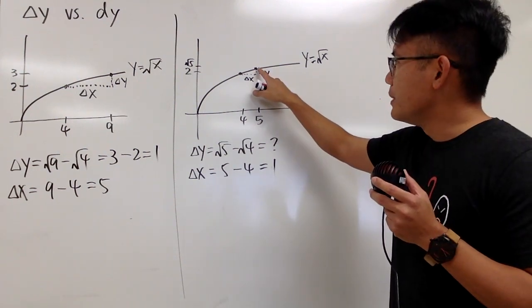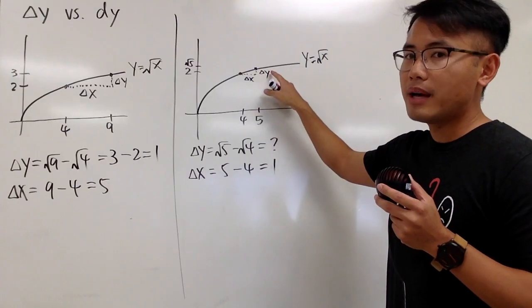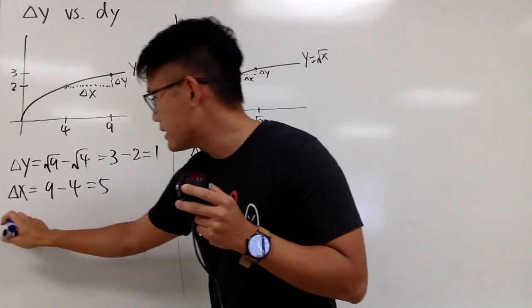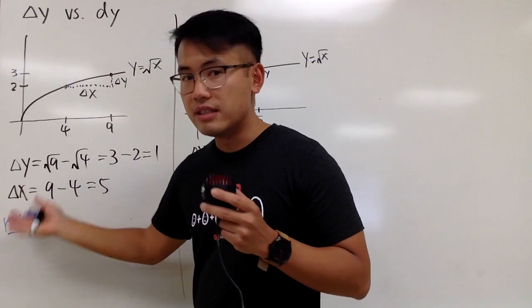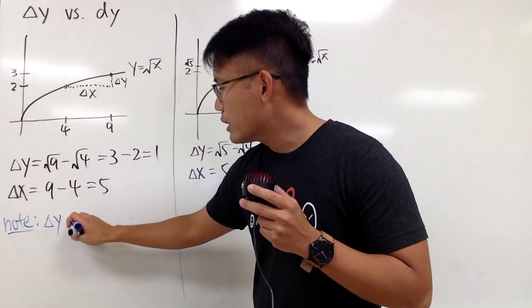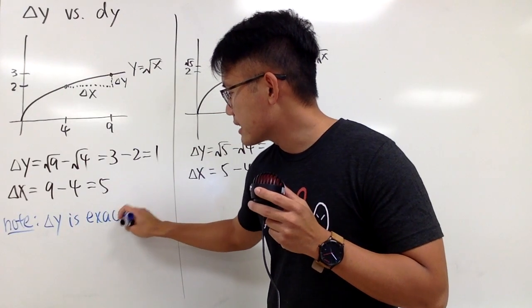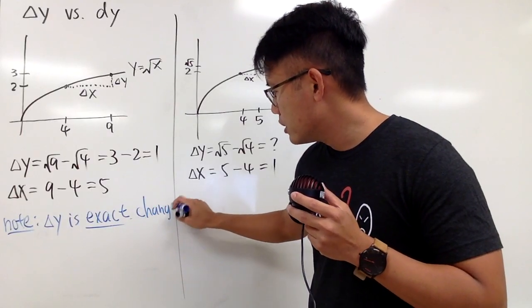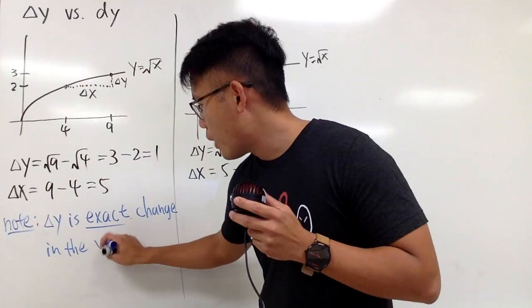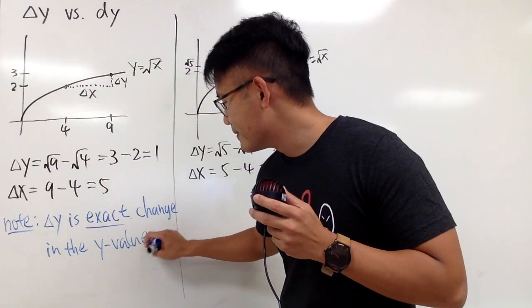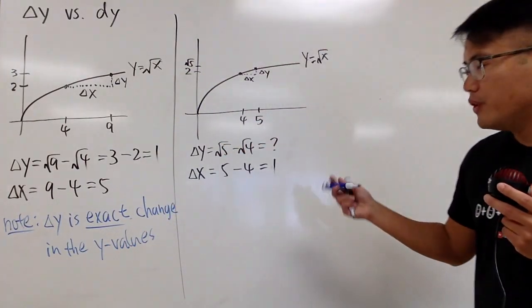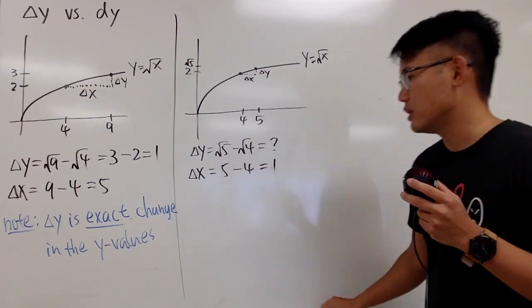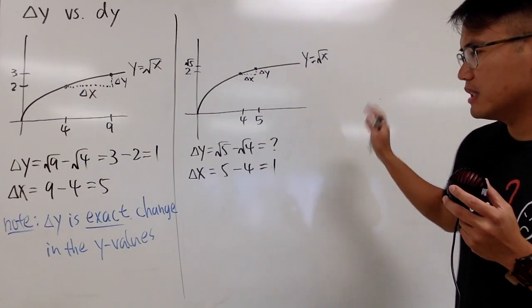All right, ideally speaking, you want to have the delta x and also the delta y, because they are the exact change. And let me just put this down for you guys. I mentioned the delta stands for change, right? Delta y, this right here, is the exact, and the keyword right here is the exact change in the y values. And of course we want to figure out, what if we move around along the x-axis, what happens to the y values?